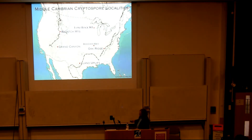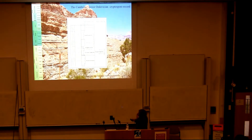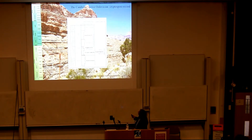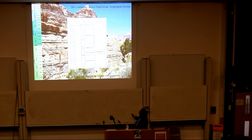Here are some of the sites where we found Cambrian outcrops. I'm going to focus on two sections: the Conessauga group in eastern Tennessee, with material from the Nolichucky Shale, Rogersville, Pumpkin Valley Shale, and the lower Cambrian Rome formation. I'll also show a few things from the Bright Angel Shale.